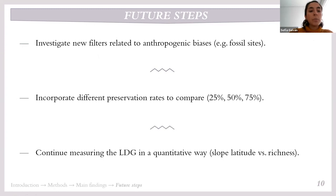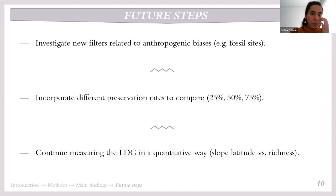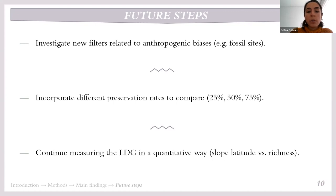As future steps, we would like to investigate new filters related to the anthropogenic fossil record bias — for example, retaining only data from sites known to have fossil information. We also want to incorporate different preservation rates, comparing 25%, 50%, and 75% species extraction. Additionally, we want to measure the latitudinal diversity gradient more quantitatively, not just plotting the data visually, but also measuring the slope between latitude and richness values for each scenario.